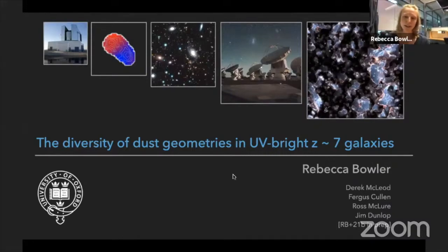Perfect, yes thank you so much, it's a real pleasure to be able to speak at this lovely conference this week. So as Caitlin said, the title of my talk is the diversity of dust geometries in UV bright redshift 7 galaxies, and this is work in preparation with these co-authors listed on the slide here.